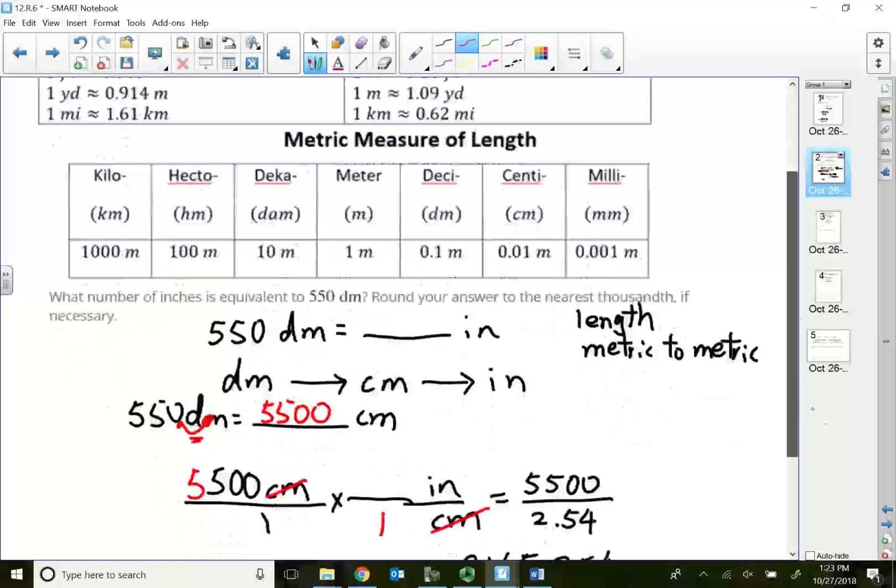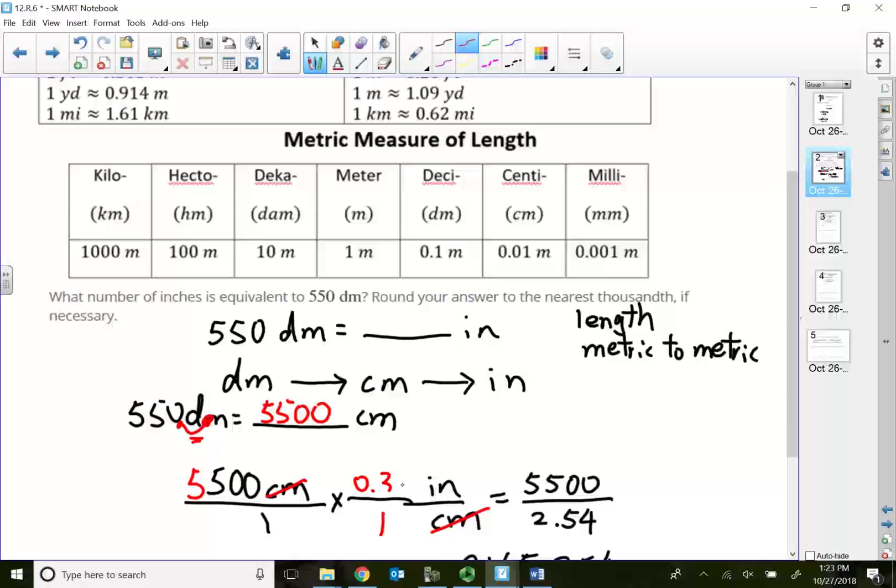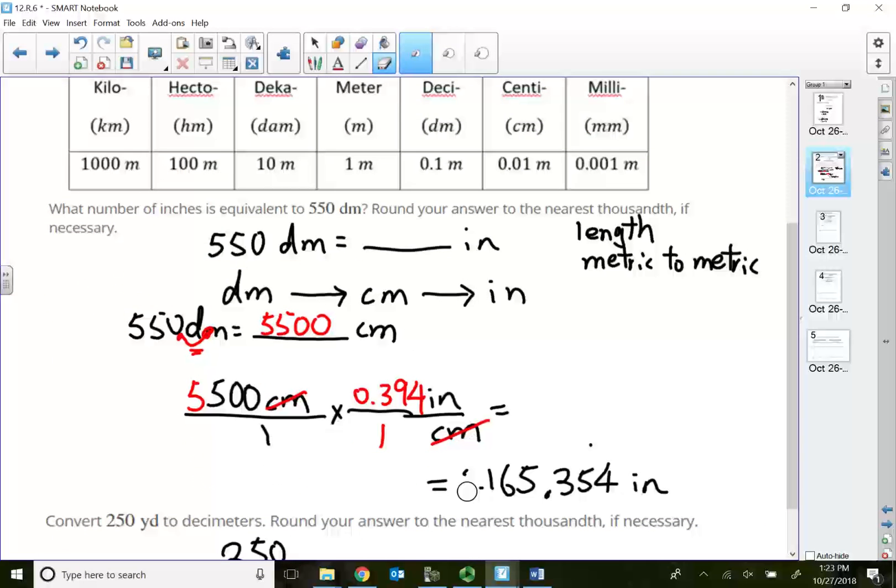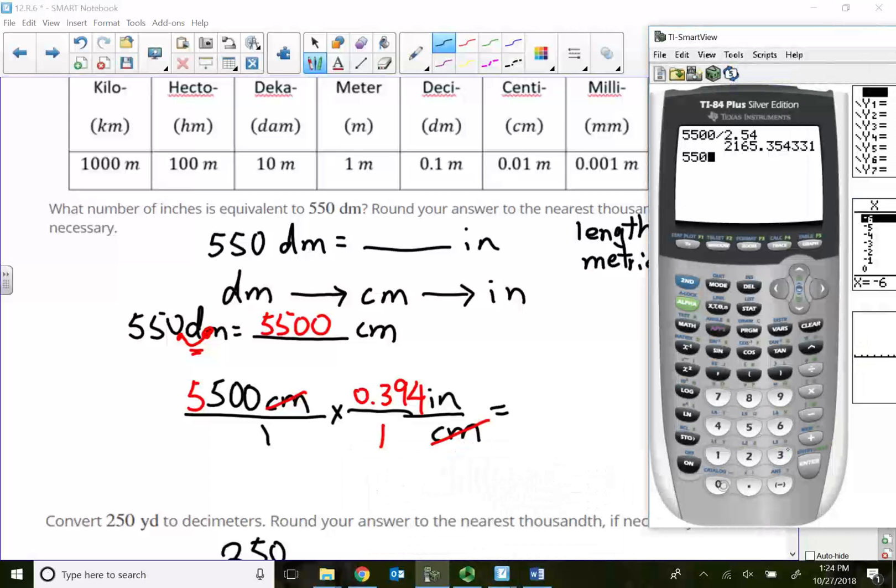Let me rewrite these two numbers real quick. It says 1 centimeter equals 0.394 inches, so my answer won't be that much off. Once the centimeters cancel out, this problem becomes 5,500 times 0.394, which is actually 2,167 inches.